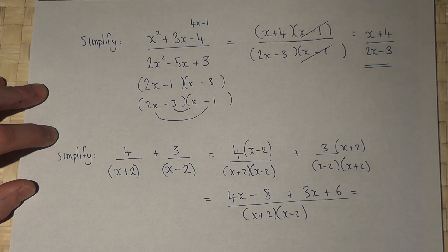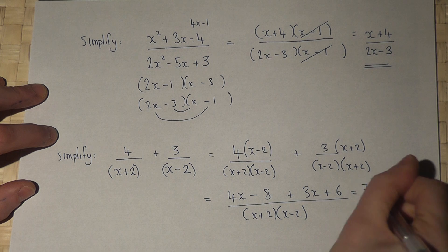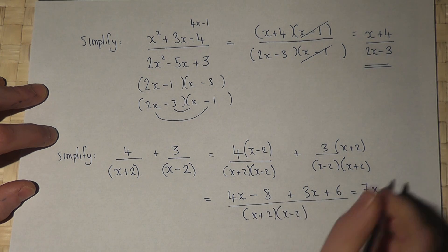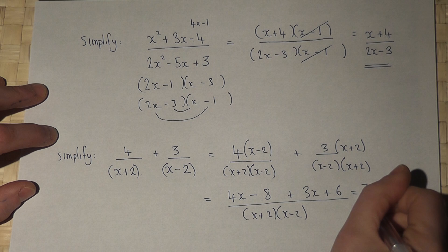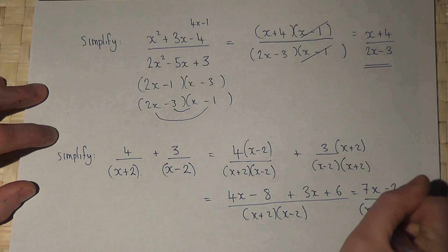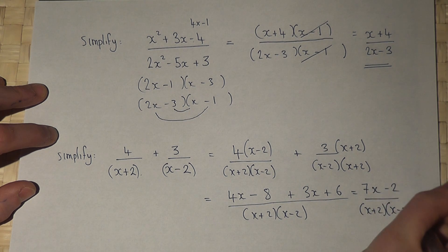This is going to be simplified. 4x plus 3x is 7x. Minus 8 plus 6 is minus 2, all over x plus 2 and x minus 2.